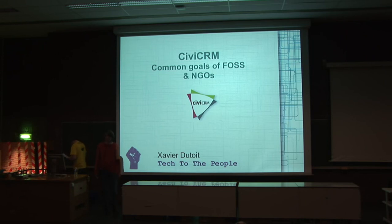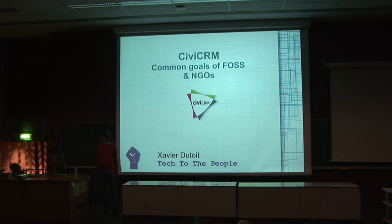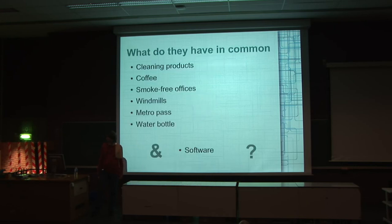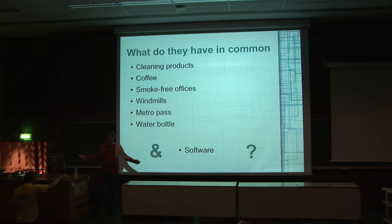I'm going to talk about CiviCRM, which is an open source contact management system. And I'm going to talk about the common goals of the NGOs and the free software. So let's start with this product. What do they have in common? What is common between a cleaning product, a coffee, a windmill, a metropath?